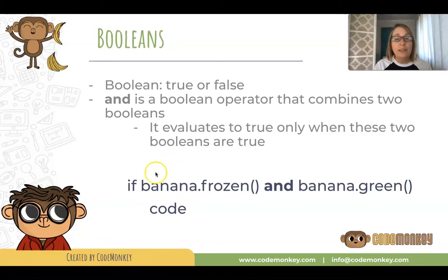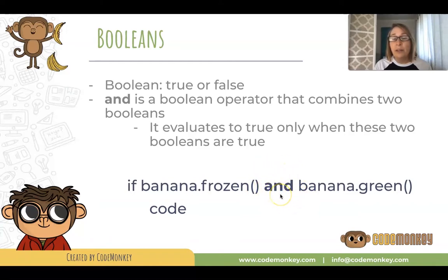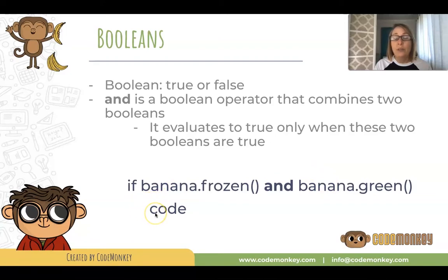Here we have an example of an if statement: if banana frozen and banana green. Because we're using the AND Boolean operator, it means that both the banana must be frozen — this must be true — and the banana must be green — this must be true. Both must be true in order for the indented code to run.